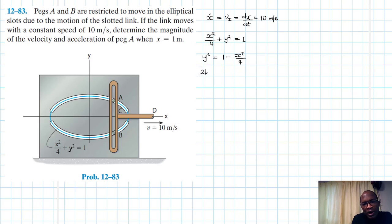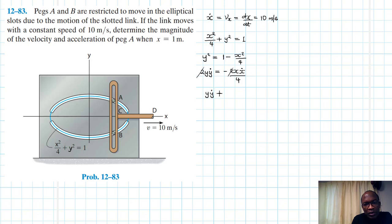Let's find the time derivative of Y as well as X. This becomes 2y·ẏ equal to minus 2x·ẋ divided by 4. So this simplifies to ẏ equal to minus x·ẋ divided by 4y.